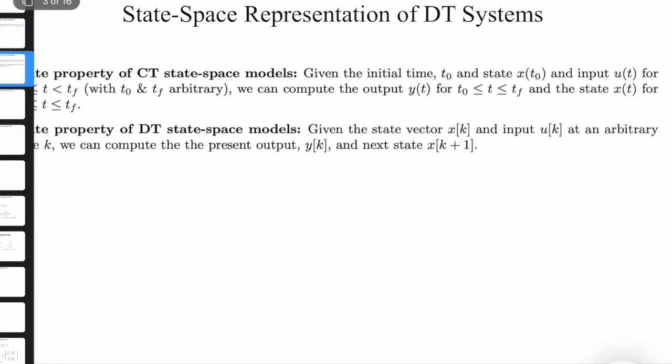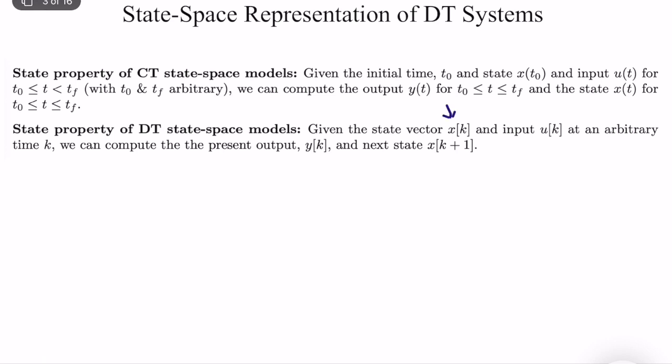For discrete time systems, it's easier. Given state vector x(k) at an arbitrary time k and input u(k), if you can compute the future output and the next state x(k+1), then x(k) is a valid state for your system. It's obvious that if you can compute x(k+1), you can then compute y(k+1), x(k+2), and so on — it's like a proof by induction. This is the definition of a state for discrete-time systems.